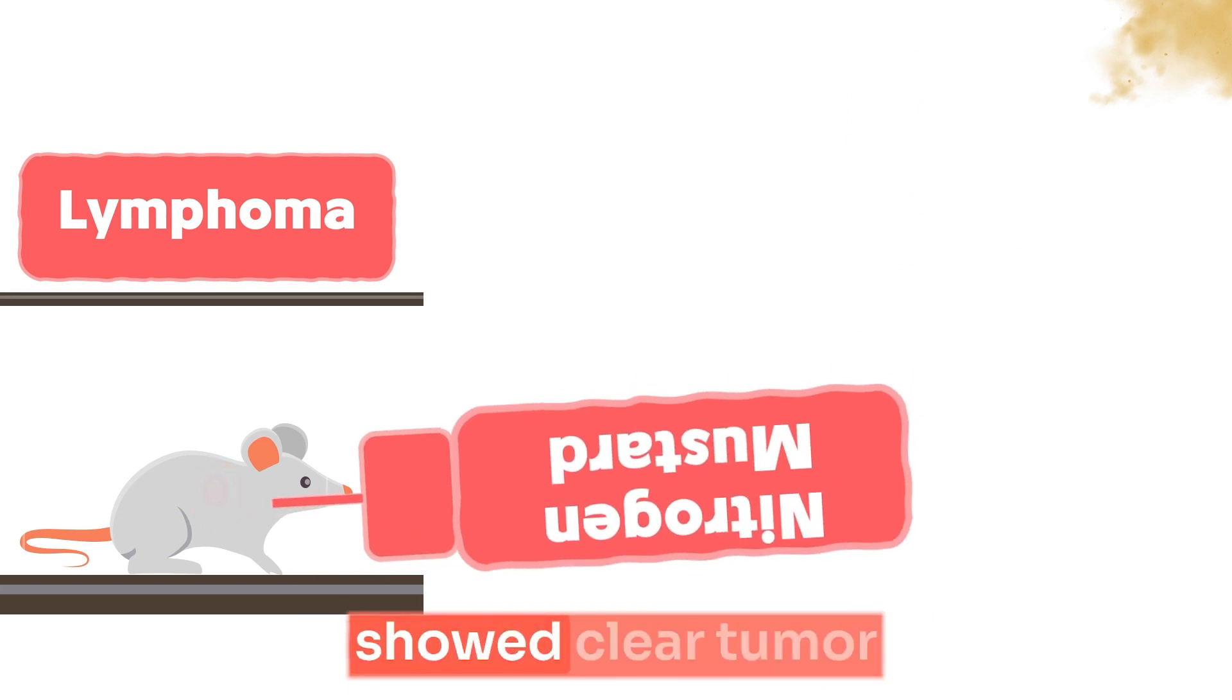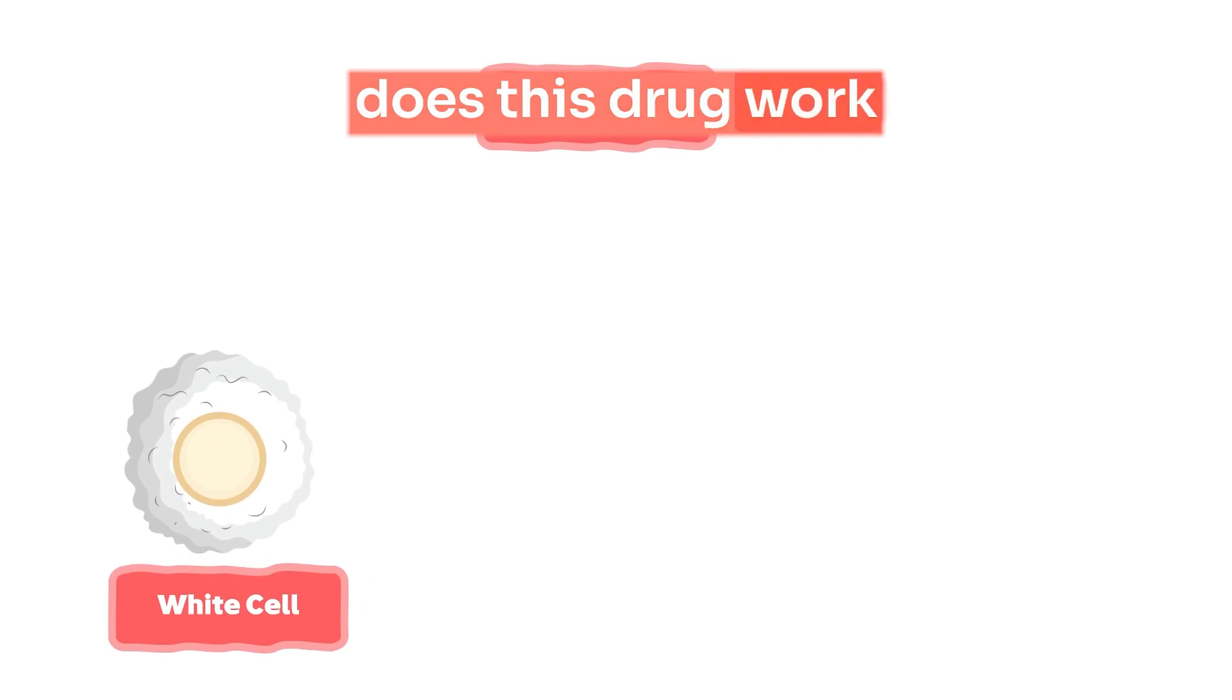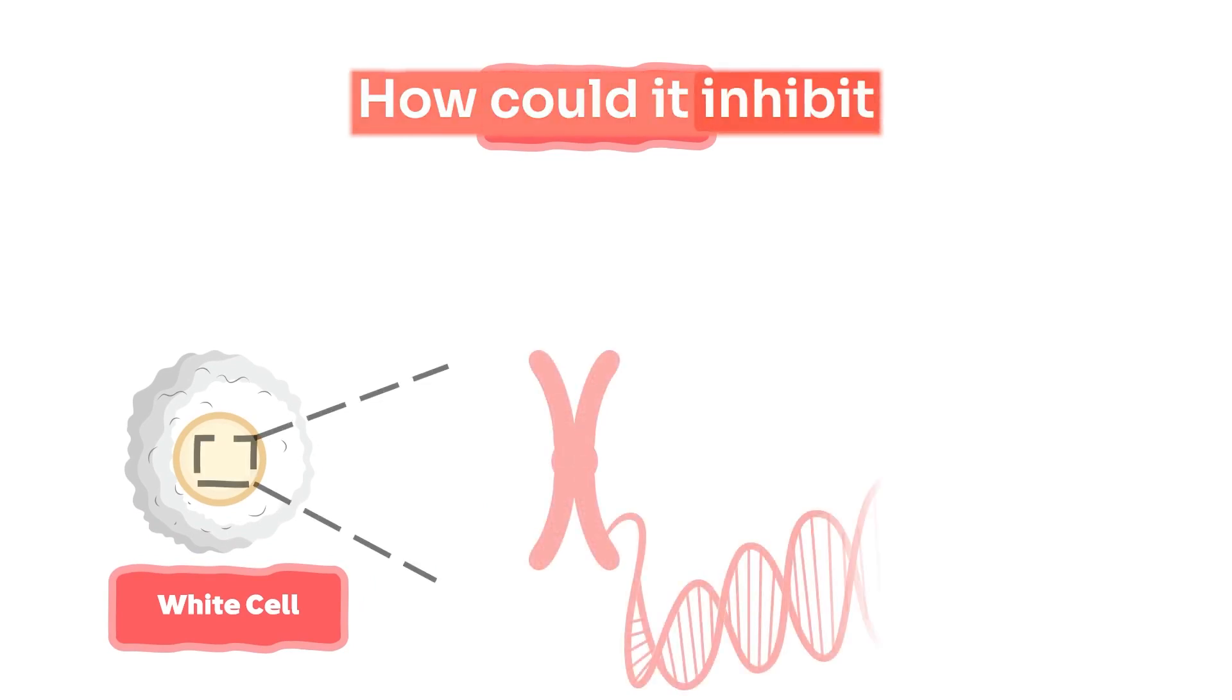Fortunately, the mouse showed clear tumor mass shrinkage, declaring the first anti-cancer alkylating drug through history. You are probably now asking yourself how does this drug work on the cell level. How could it inhibit cell division?